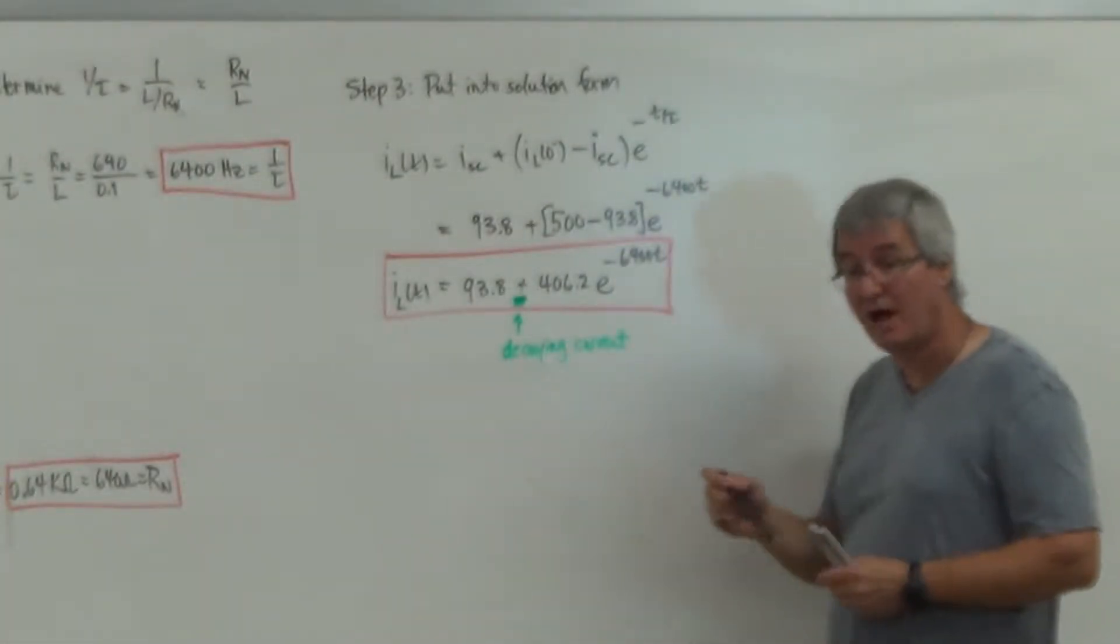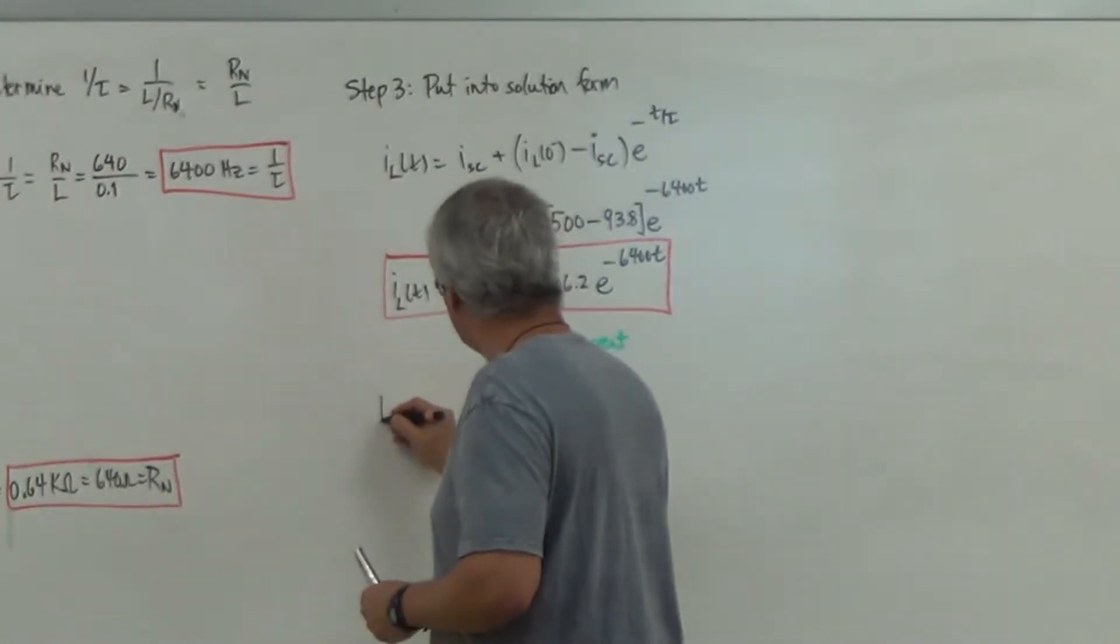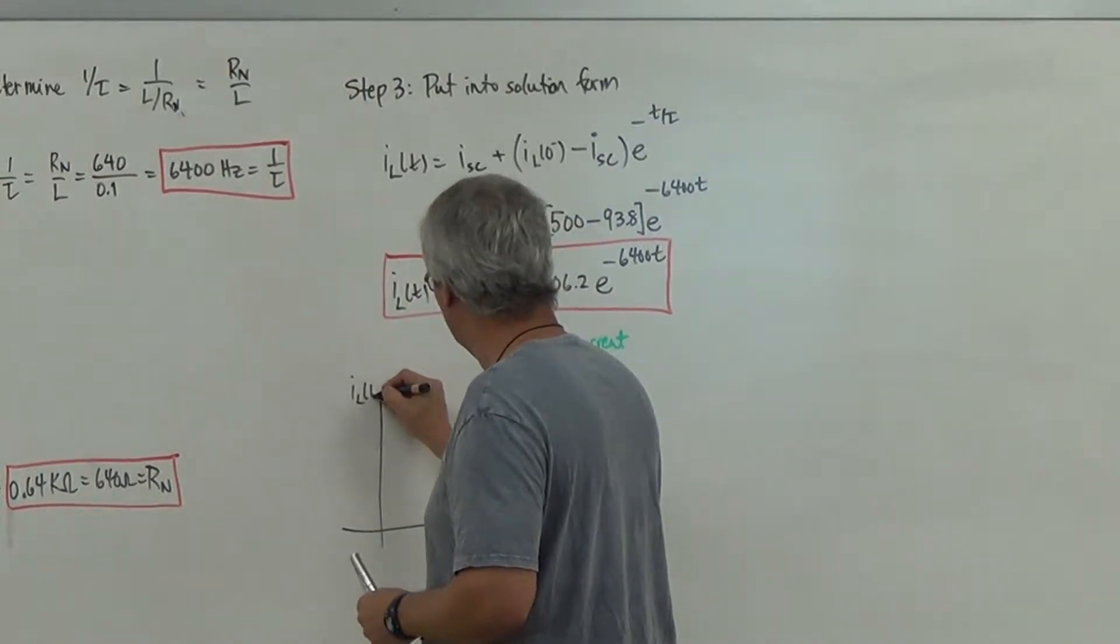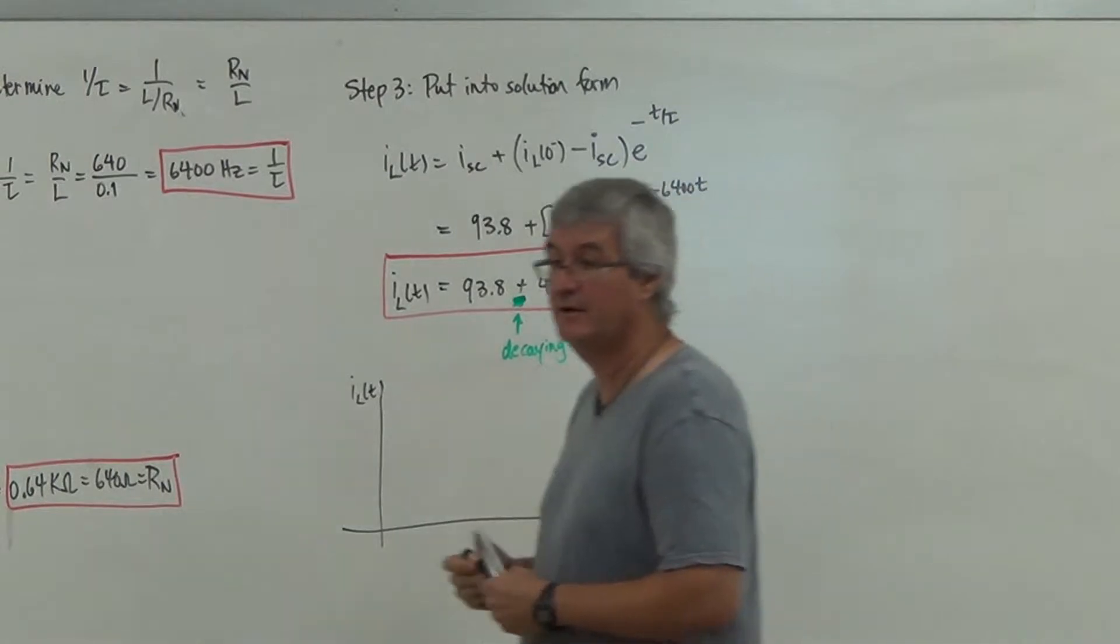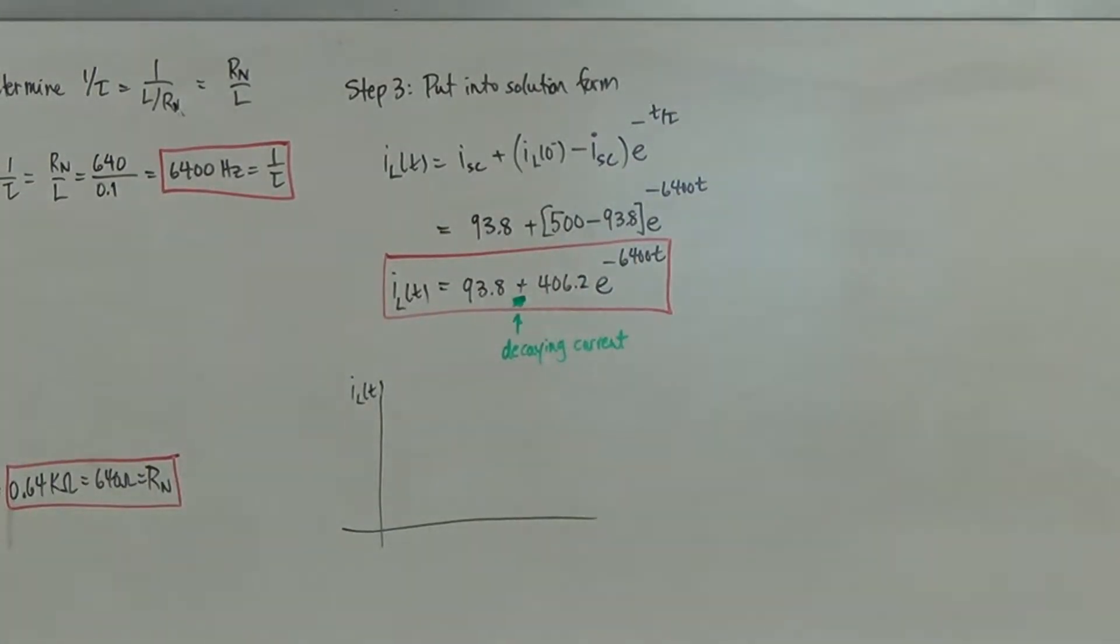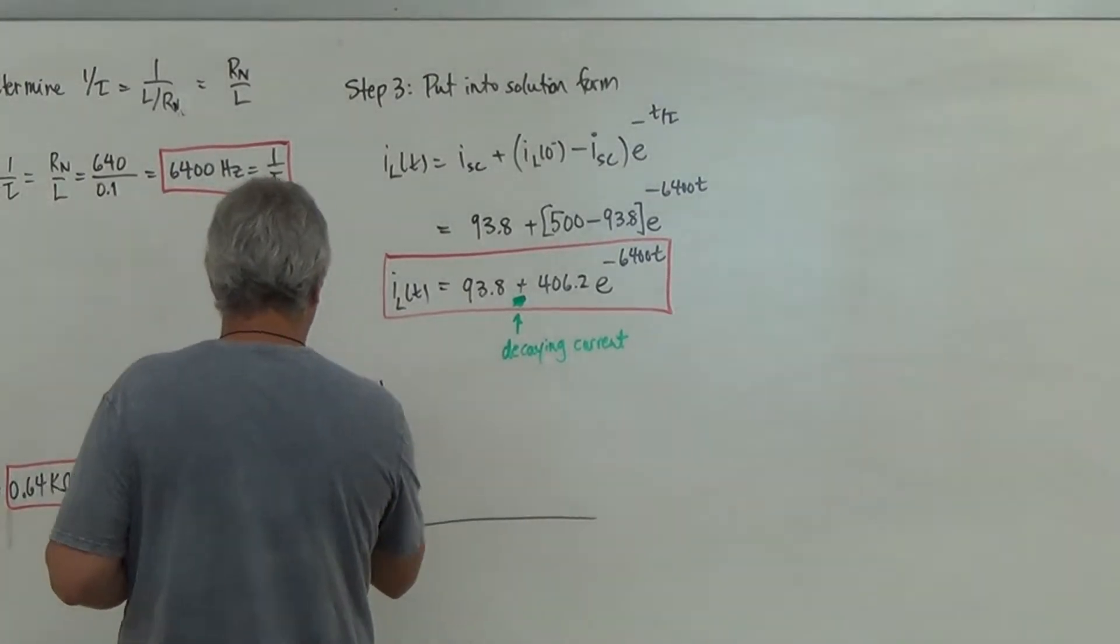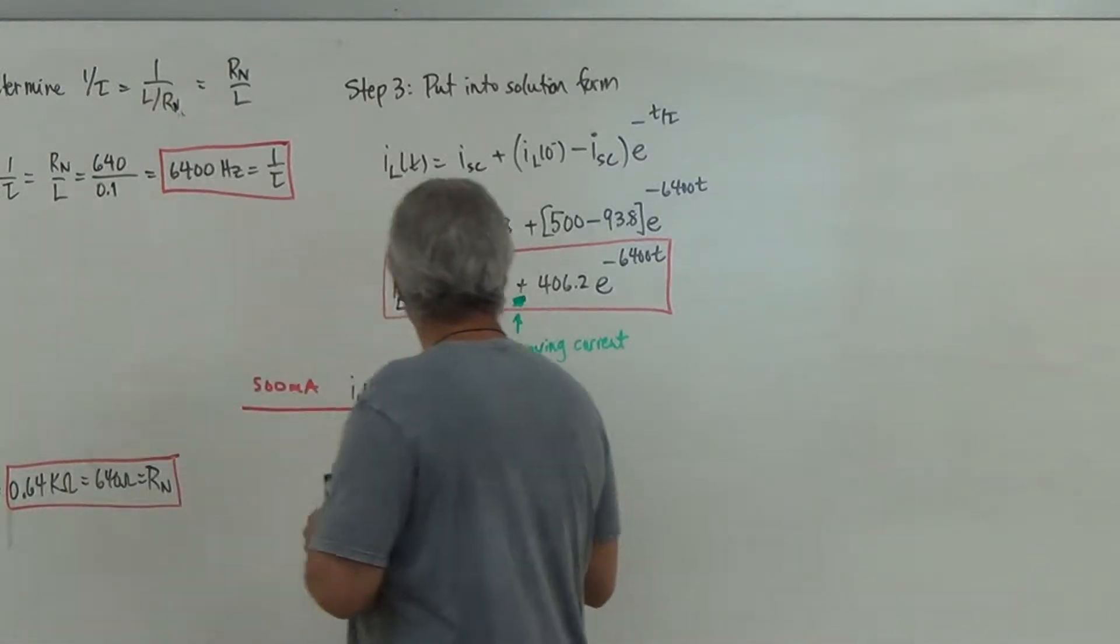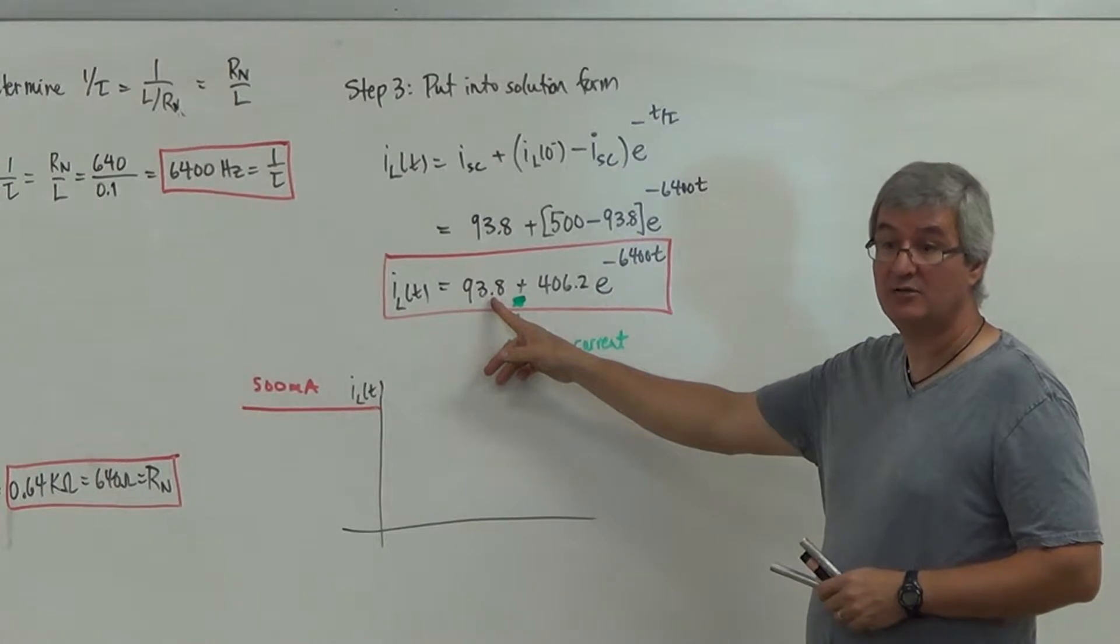So if I go and I plot this thing, what does this tell me? So if I plot the current of the inductor here, what you're seeing is I'm going to get IL of T, and you can see it starts off at 500 milliamps. So I'm coming in at 500 milliamps.